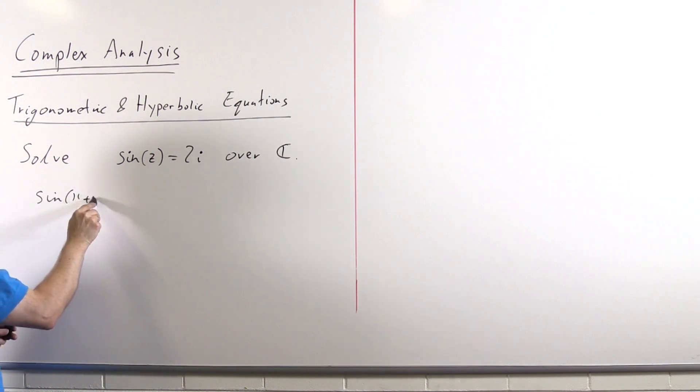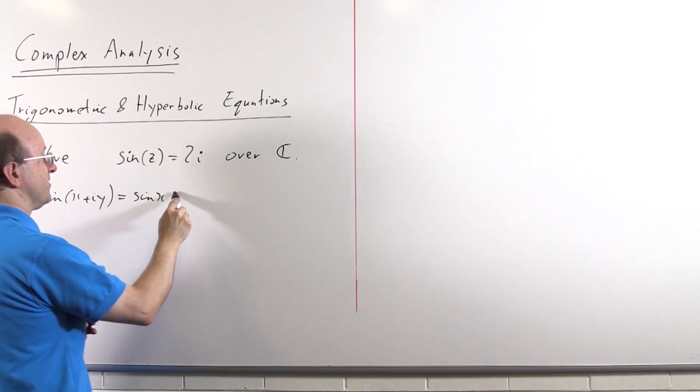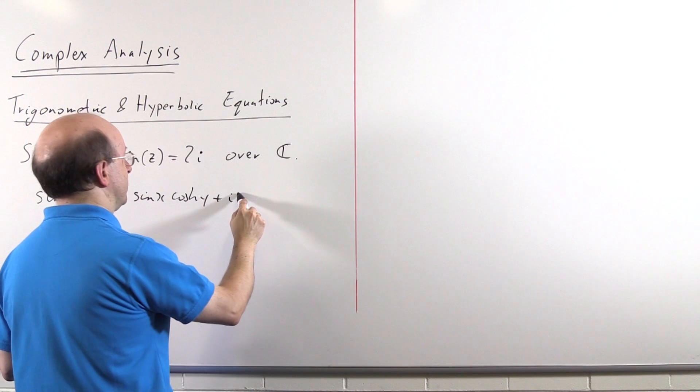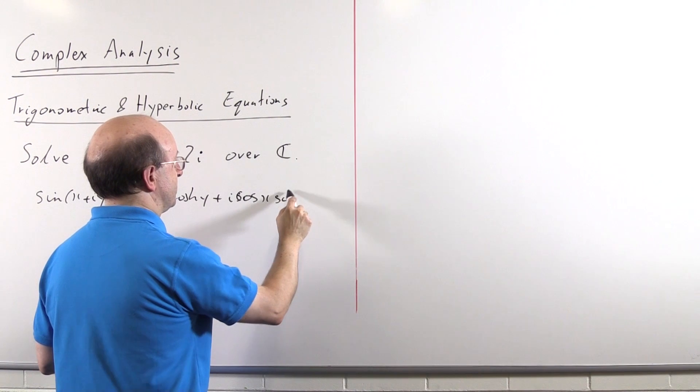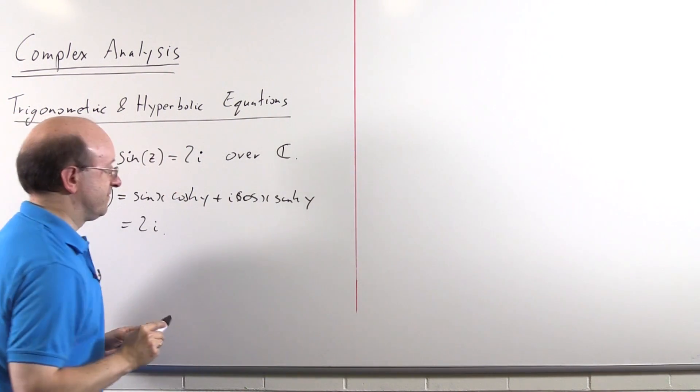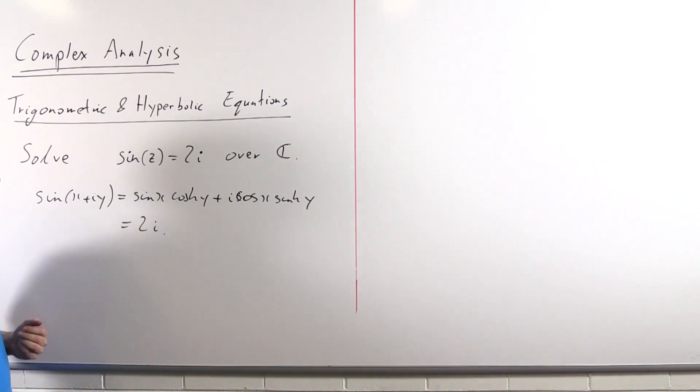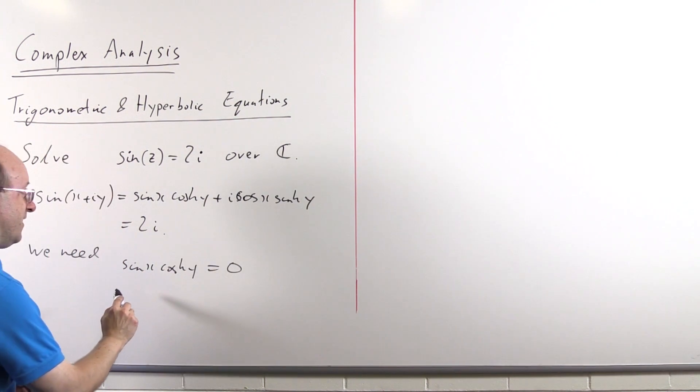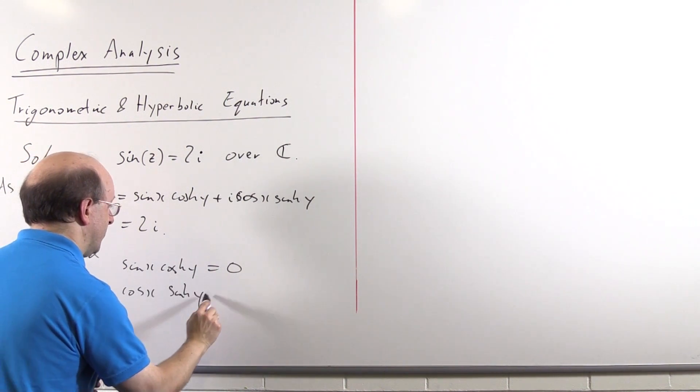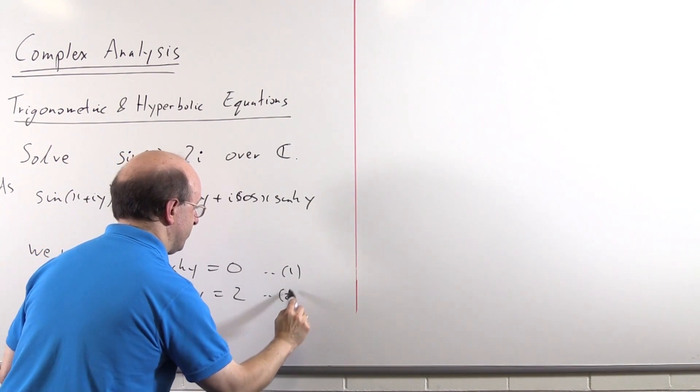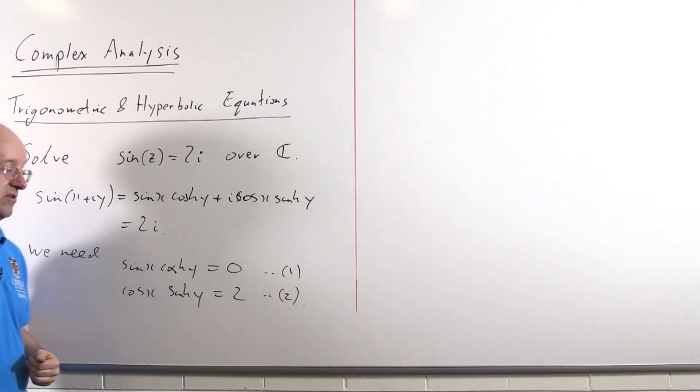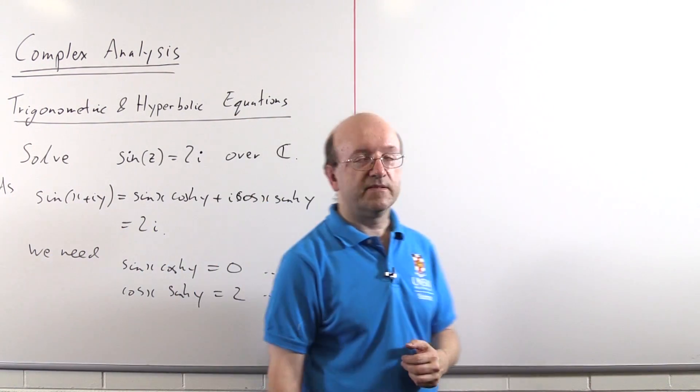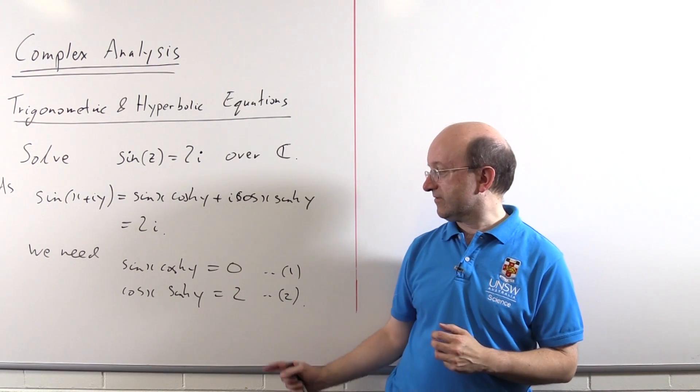Sine of x plus iy is sine of x cosh of y plus i cos of x sinh of y, which is to be 2i. And now we can compare real and imaginary parts, and we get two equations. So let's put some English around this. What do we need? Well, our first equation says that sine x cosh y is 0, and our second one says that cos x sinh y is 2. So we'll call that equation 1 and that one equation 2. And these are our two equations to be solved.